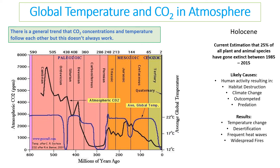We are currently increasing the temperature of the planet due to carbon dioxide, which many link to what is called the Holocene extinction. This current extinction event, higher than expected, is likely due to climate change, which is linked to the increase in carbon dioxide in our atmosphere increasing the temperature.